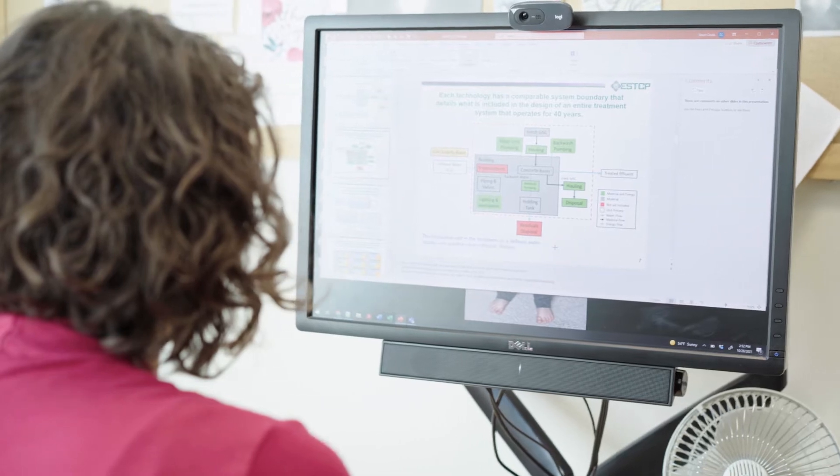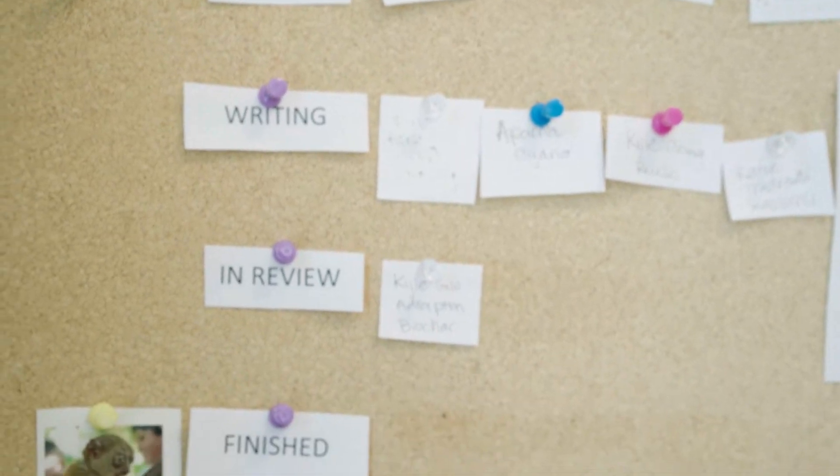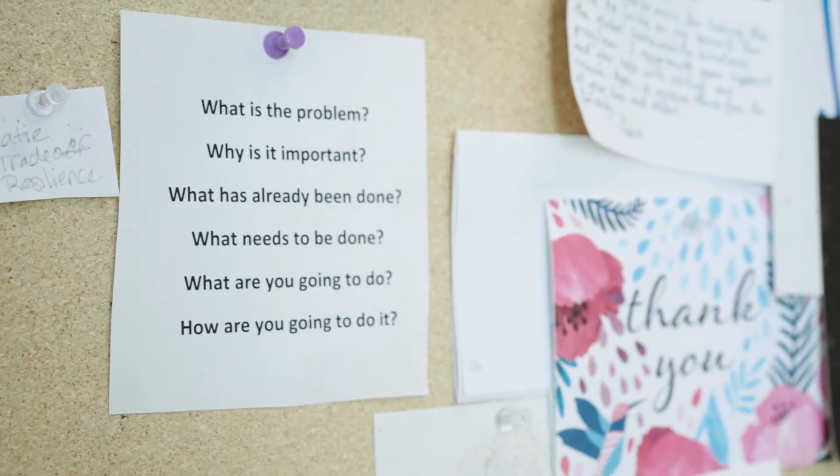Almost everything I do falls under sustainable water treatment systems and so what that means is I quantify environmental impacts, I quantify social impacts as best we can, and then I quantify cost. And then I apply that to how we design technologies, how we select technologies, and how we implement those technologies, making sure that we use the most appropriate technologies for a given context.